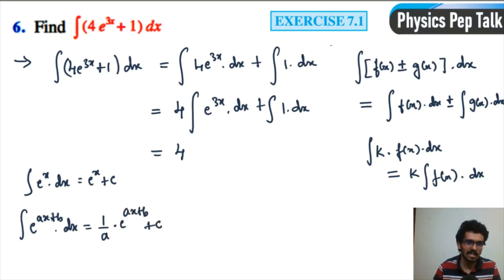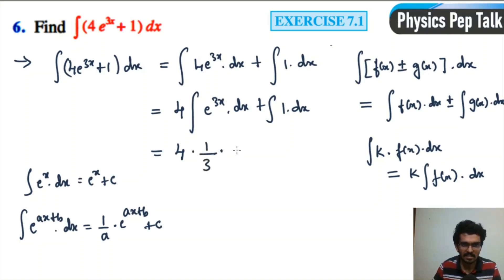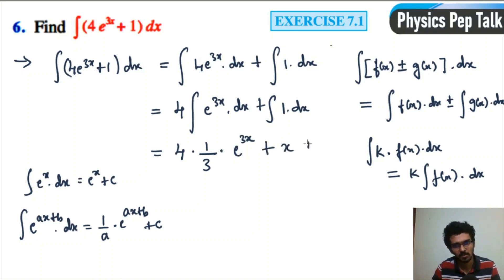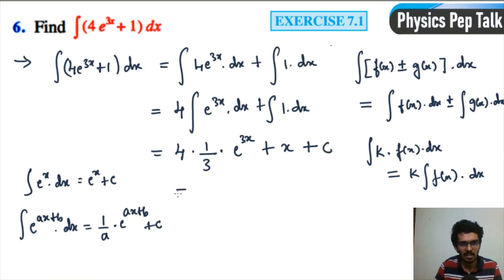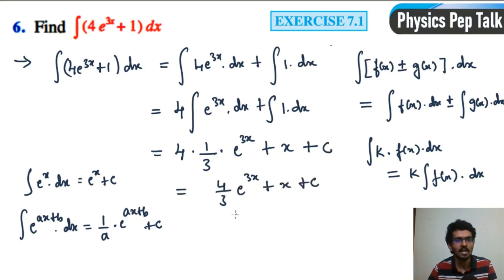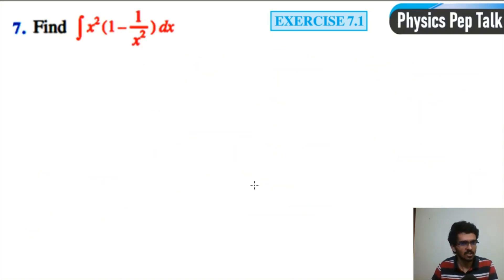Here, comparing with ax plus b, we have 3x plus 0, so a equals 3. That gives us 1 over 3 times e to the power of 3x, plus the integral of 1 dx which is x. Whenever you do integration you have to put the integral constant c. So we have 4 divided by 3 times e to the power of 3x plus x plus c. This is the integral value.